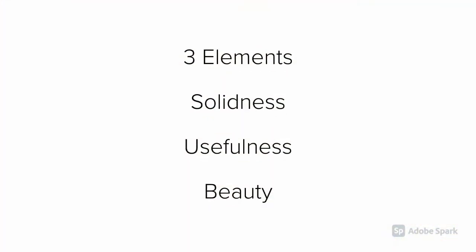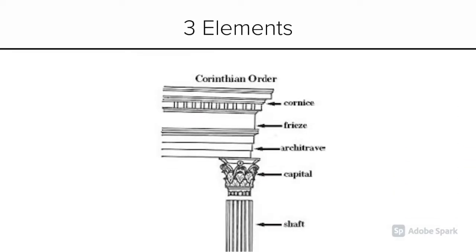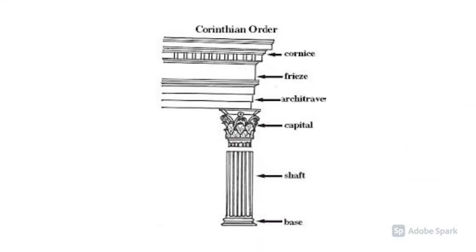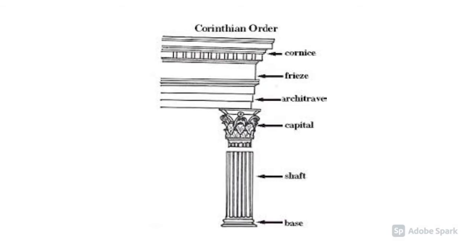His philosophy on architecture had three elements: solidness, usefulness, and beauty. Here's a visual of some of the parts of the columns I'll be talking about.